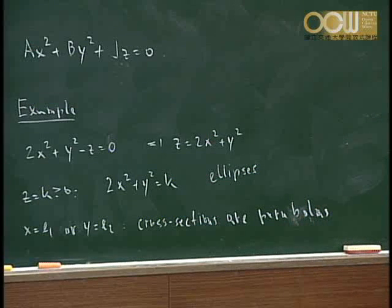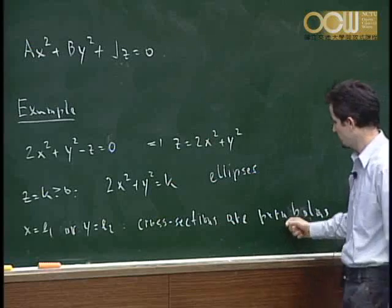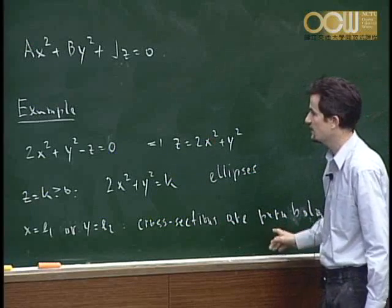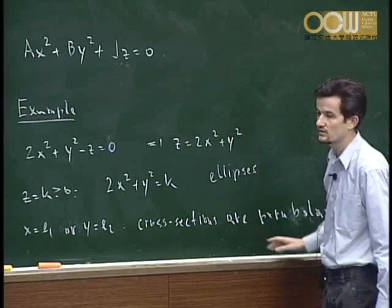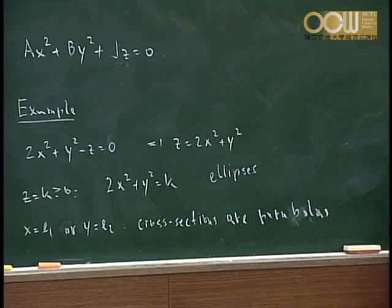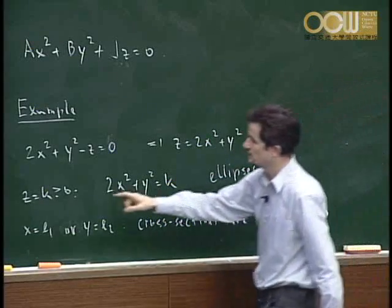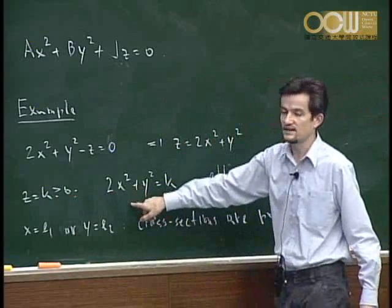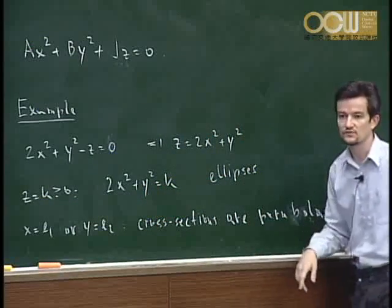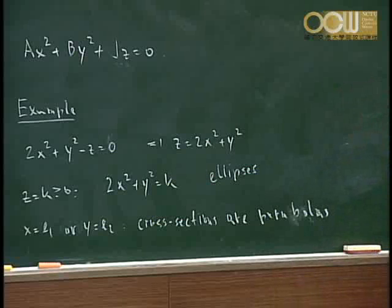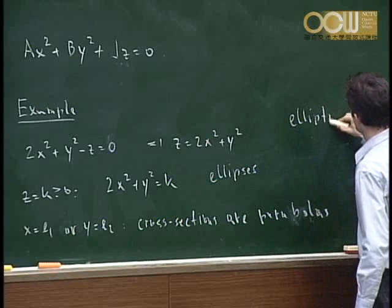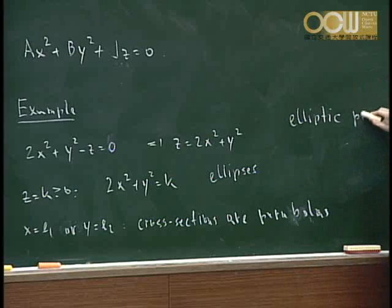If instead x or y is fixed as a constant, the cross-sections are always parabolas. So you get parabolas in two cases and ellipses in one. This type is called the elliptic paraboloid — named paraboloid because parabolas dominate, and elliptic because the remaining cross-sections are ellipses.